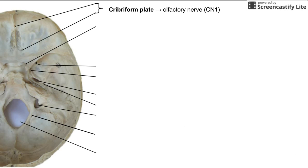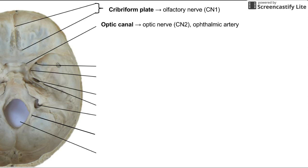At the very top, we see the cribriform plate. This is the most anterior foramen, and the olfactory nerve, or cranial nerve 1, goes through the cribriform plate. Going down from anterior to posterior, we next have the optic canal, through which the optic nerve and the ophthalmic artery run.